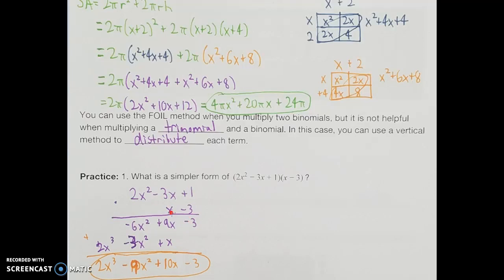Skipping a space before starting the next term: x times 1 is x, lined up with the x from the last answer. x times negative 3x gives negative 3x squared, and x times 2x squared gives 2x to the third. Now that those like terms are lined up, I just add them together. Negative 3 stays negative 3. 9x plus x is 10x. Negative 6x squared minus 3x squared gives negative 9x squared. And 2x to the third in front had nothing to combine with. So my standard form of this product is 2x to the third minus 9x squared plus 10x minus 3.